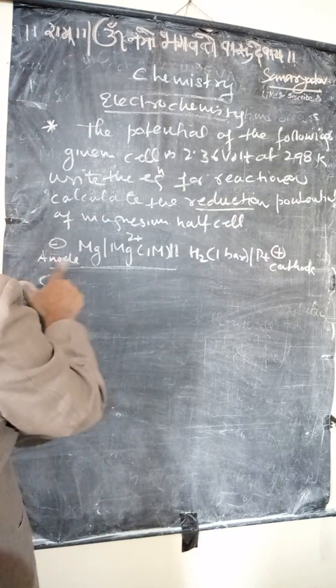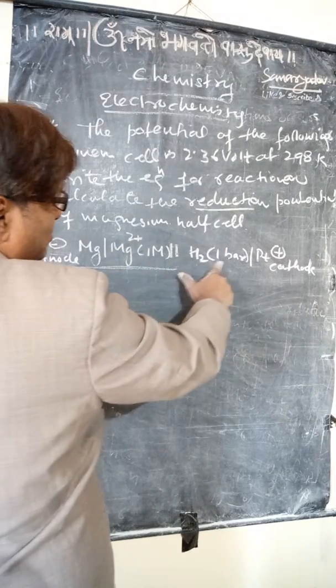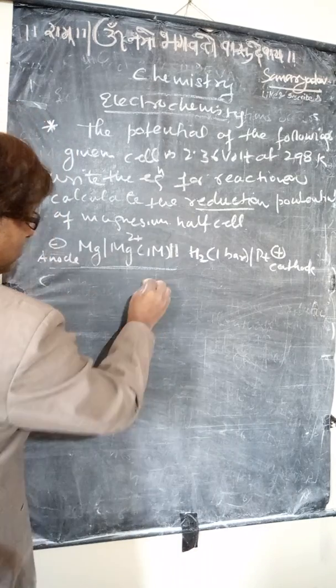The cell is given as: anode Mg | Mg²⁺ (1 mol) || H₂ (1 bar) | Pt cathode. Now we will write the reactions.